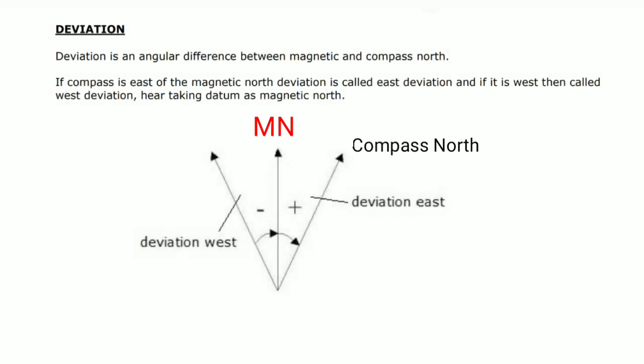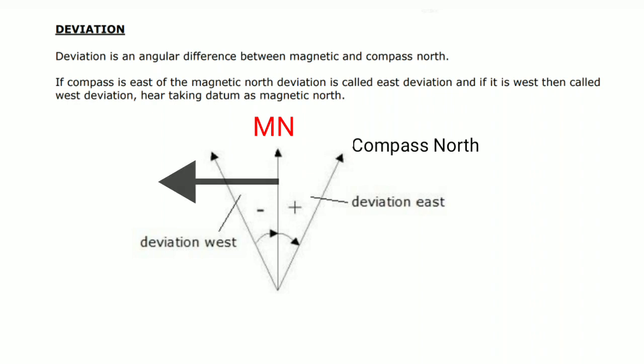Deviation is the angular difference between magnetic north and compass north. If compass north is east of magnetic north, the deviation is called east deviation; if it is west, we call it west deviation — here taking magnetic north as the datum. This is similar to variation, which is the angular difference between true north and magnetic north where true north is the datum. In the case of deviation, the datum is magnetic north, so compass north will be either east or west of magnetic north.